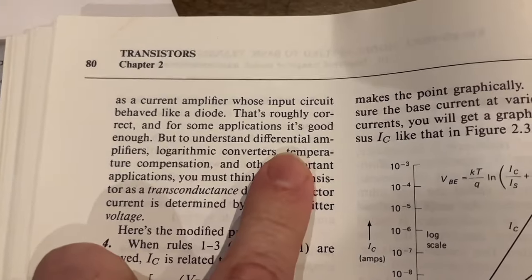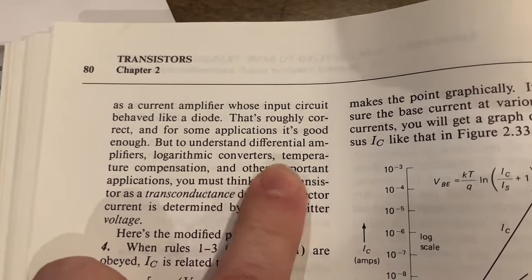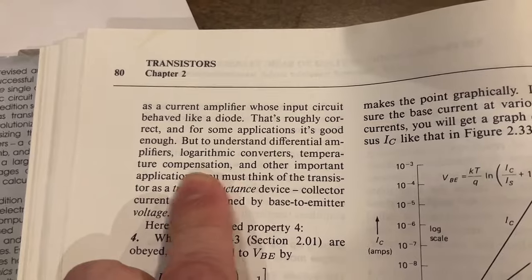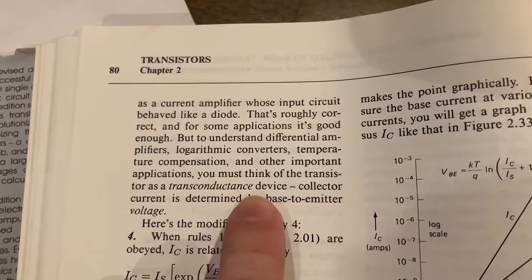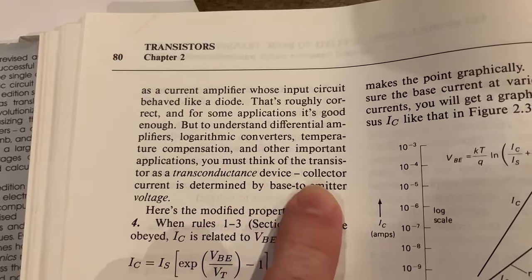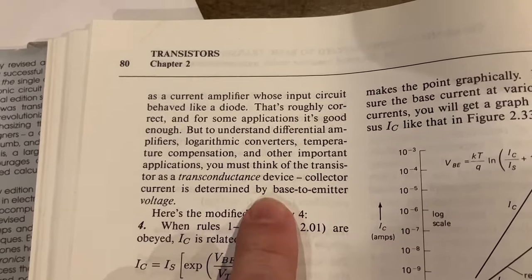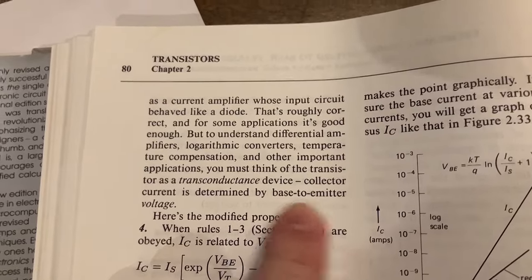But to understand differential amplifiers, logarithmic converters, temperature compensation, and other important applications, you must think of the transistor as a transconductance device. Collector current is determined by the base-to-emitter voltage.